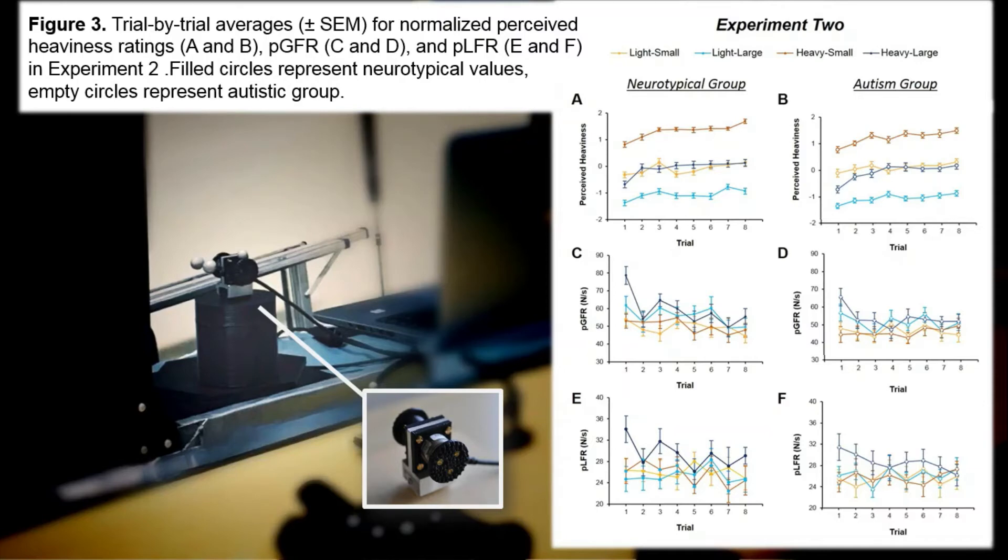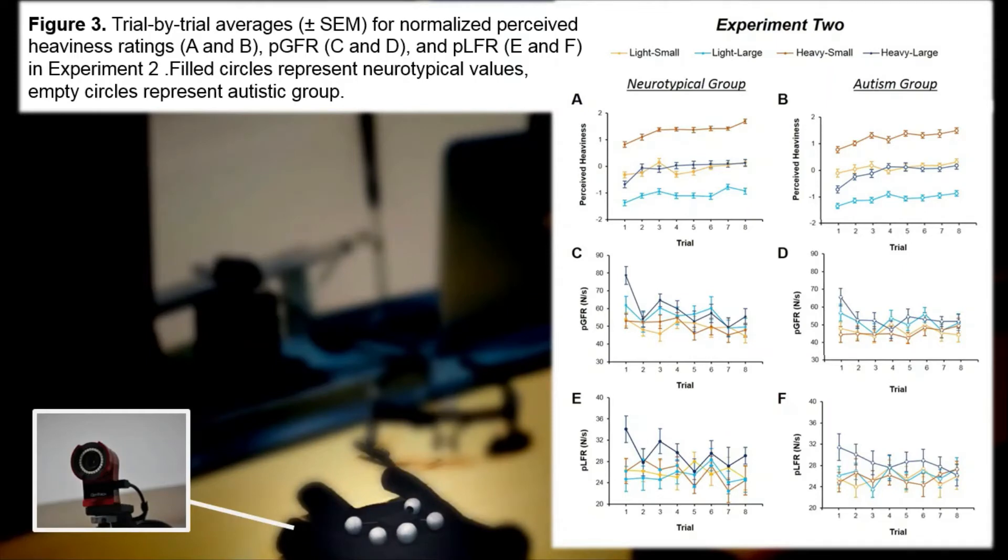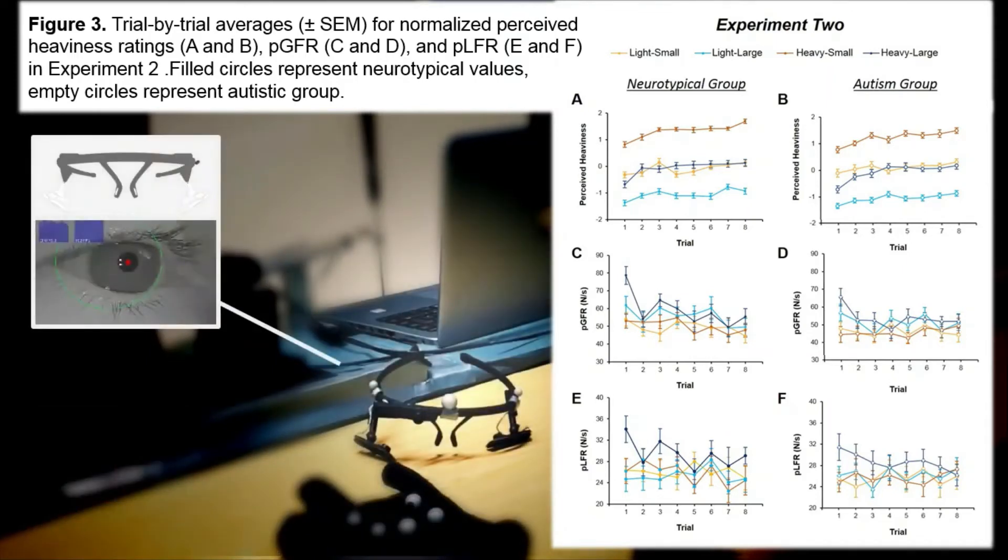If we just focus on this peak grip force rate and peak load force rate data from panels C to F, we can see that on initial trials, participants in both groups tended to lift the heavy-looking objects—so the larger ones—with more force than the lighter objects. This suggests that prior expectations were having a similar impact on action behaviors in both groups. Similarly, there were no prediction-related effects in any of our kinematic variables in Experiment 1 and broadly in our gaze visual search rate pattern shown in Experiments 1 and 2.